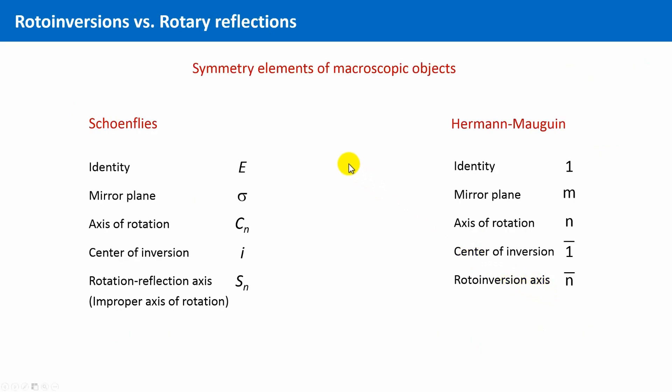Four of the five possible point symmetry elements are handled in an identical manner in both worlds: identity, mirror planes, rotational symmetry and center of inversion. But the fifth one, these rotoinversions are expressed in the world of molecules differently, namely by or as rotary reflections. It will turn out that these two symmetry elements and the respective symmetry operations are fully equivalent.